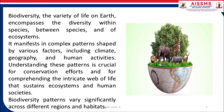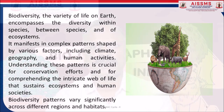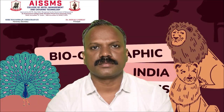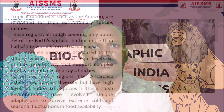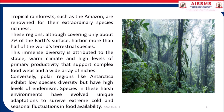Biodiversity patterns vary significantly across different regions and habitats. Tropical rainforests such as the Amazon are renowned for their extraordinary species richness. These regions, although covering only about 7% of the Earth's surface, harbor more than half of the world's terrestrial species. The immense diversity is attributed to the stable, warm climate and high levels of primary productivity. Conversely, polar regions like Antarctica exhibit low species diversity but have high levels of endemism.